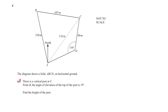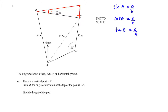Question number four: the diagram shows a field ABCD on horizontal ground. There's a vertical post at C. From B, the angle of elevation of the top of the post is 19 degrees. We need to find the height of the post. The angle of elevation is 19 degrees and the right angle is 90 degrees.